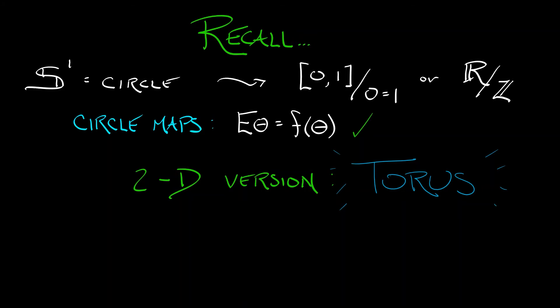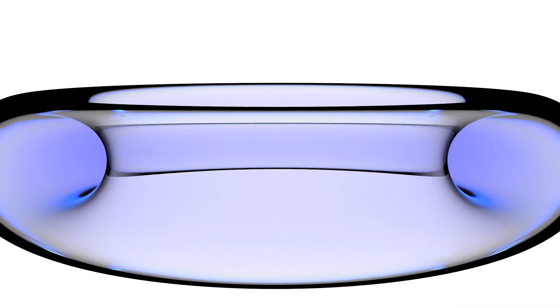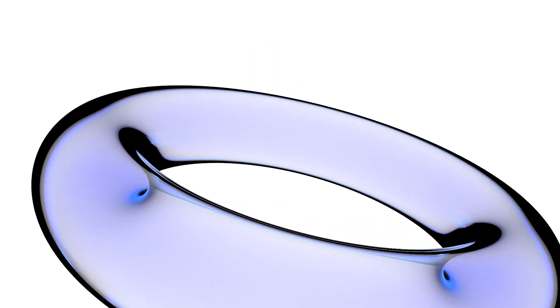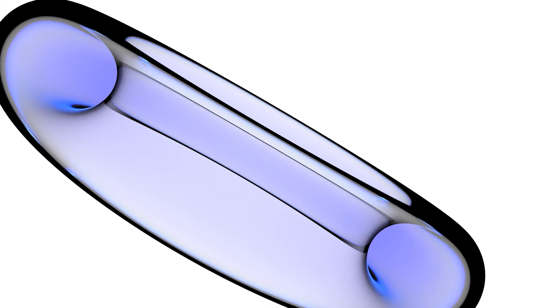Now what's a torus? You've seen tori before. You probably called them donuts. They are two-dimensional surfaces that sort of wrap around, like a circle in one direction and a circle in another direction.